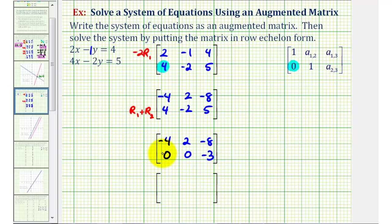Now that we have the zero in the correct position, let's take a look at our main diagonal. So to make this a one, we're going to replace row one with negative one-fourth times row one.